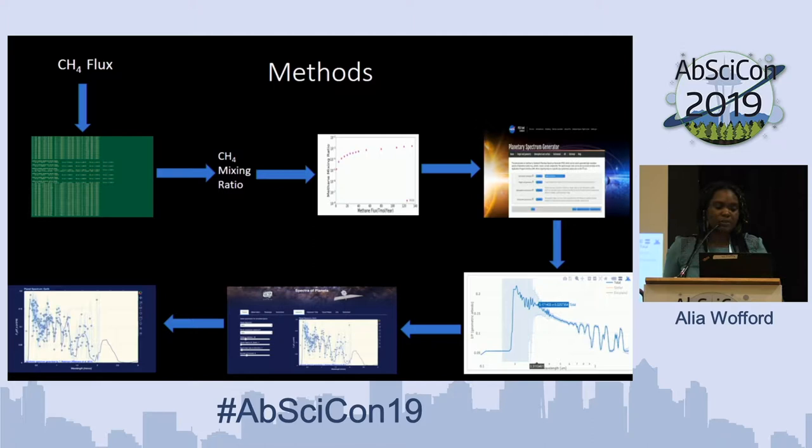In working order, we give Atmos a flux, and Atmos prints a mixing ratio. We then plot our flux versus mixing ratio, and give that to PSG, which gives us the spectra. From those fluxes, we also give data to the coronagraph to produce direct imaging of what an actual observer would see based on those fluxes.